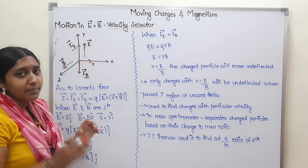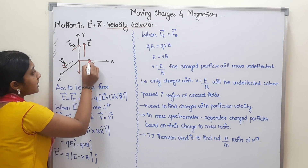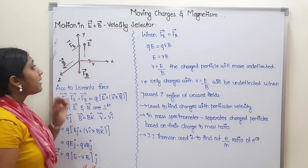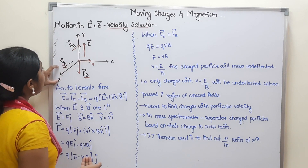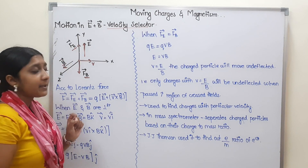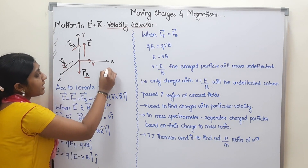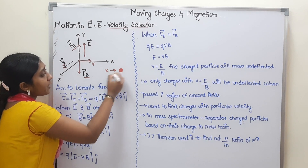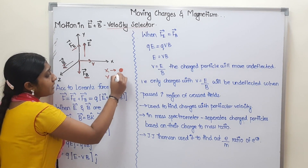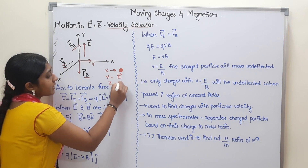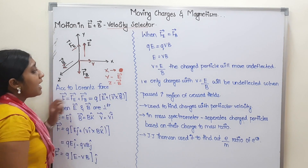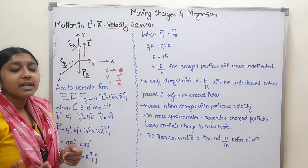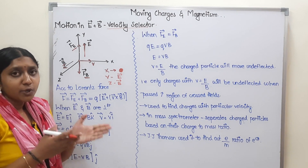So, simple. One charged particle — this charged particle is perpendicular to the electric field and magnetic field. I said that there is a charged particle in the x-axis. The y-axis is the electric field. The z-axis is the magnetic field — x, y, z — mutually perpendicular to each other.